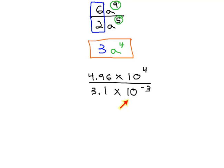So in this example, where we have 4.96 times 10 to the 4th all over 3.1 times 10 to the negative 3rd, we'll first deal with the numbers 4.96 divided by 3.1. This will give us 1.6.